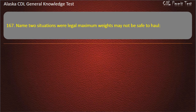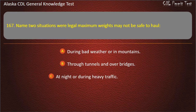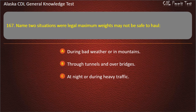Question 167. Name 2 situations where legal maximum weights may not be safe to haul: during bad weather or in mountains, through tunnels and over bridges, or at night or during heavy traffic. Answer: During bad weather or in mountains.